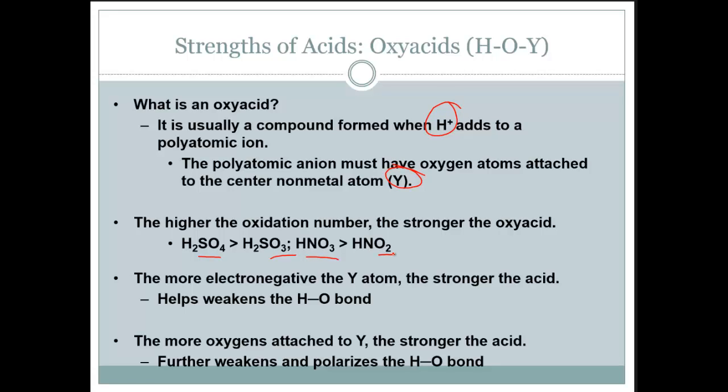The higher the oxidation number, the stronger the oxy acid. The more electronegative also, that Y atom, the stronger the acid. Both of these help weaken that OH bond and therefore the hydrogen gets donated easier.